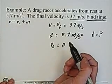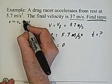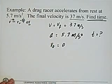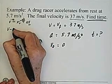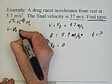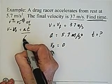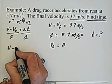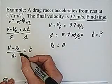So we start with this formula and we're solving for time. We subtract our initial velocity from both sides — this cancels — and we're left with V minus V₀ equals AT. Then we divide by acceleration on both sides, and we're left with V minus V₀ divided by acceleration equals time.